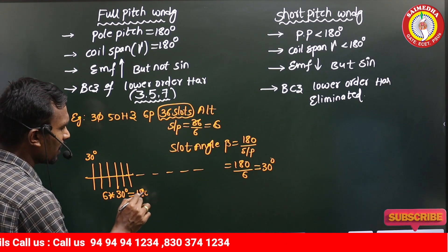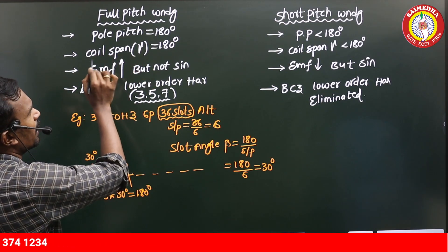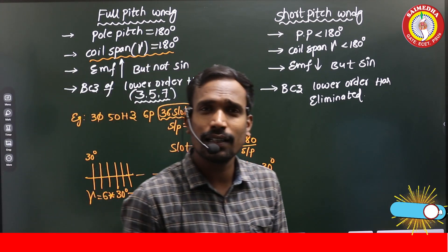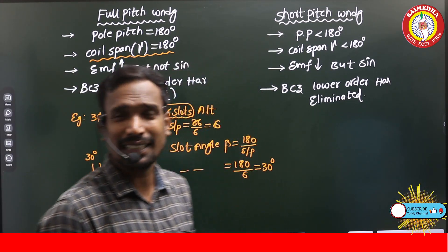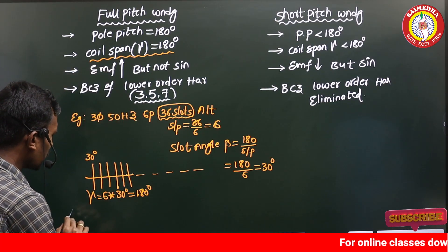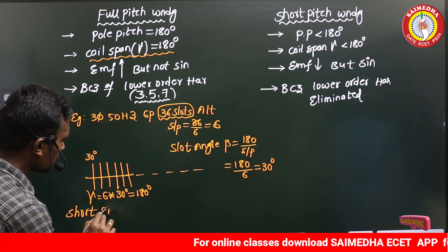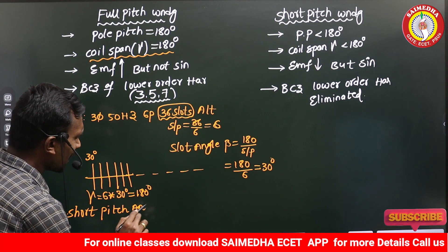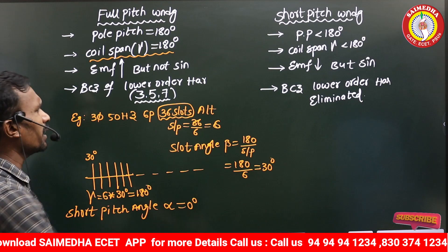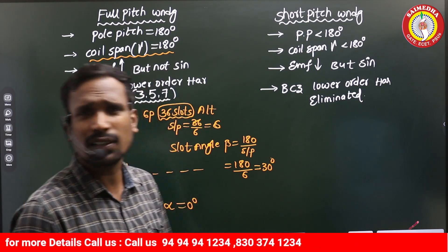The coil span is 180 degrees. Since the coil span is 180 degrees, this type of winding is called full pitch winding. The short pitch angle, denoted alpha, is zero degrees — there is no short pitching here. That is why it is called full pitch winding.